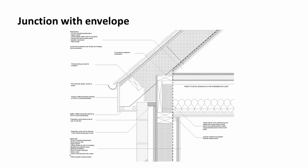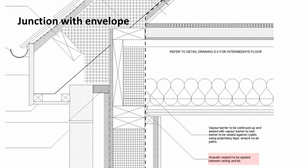Where a floor meets the envelope of the building, we have to think about how we deal with flanking sound. There's a note on the drawing that says acoustic sealant to be applied between ceiling and kit. Where the ceiling comes in, we would have a bead of acoustic sealant. Importantly, the ceiling passes right out towards the kit before the internal linings of the wall are applied, making it an easy detail to produce. The ceiling is likely to go on before the walls, as we'll run services through that void.